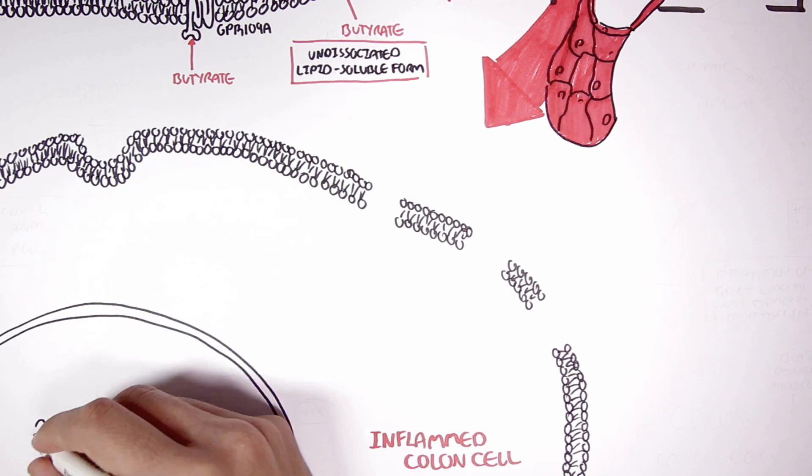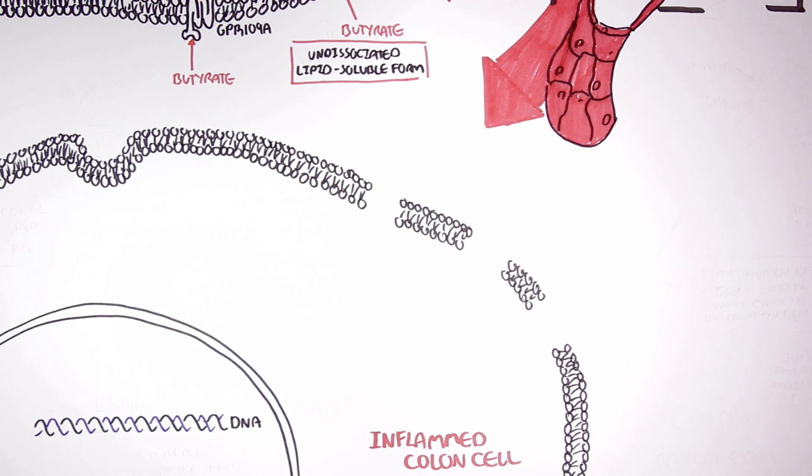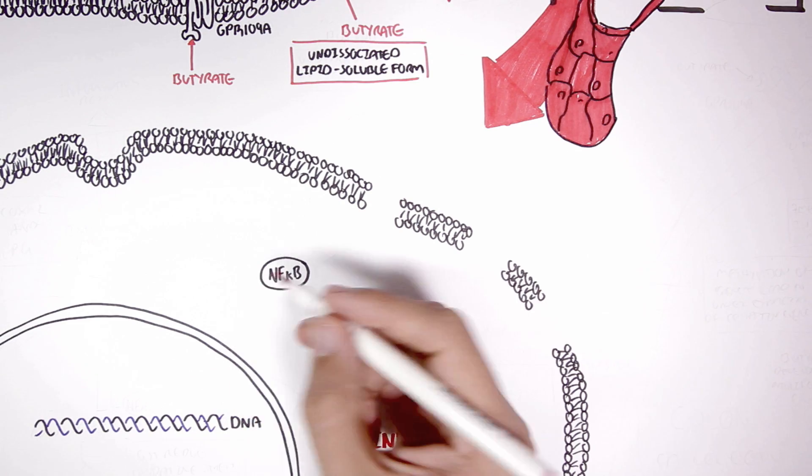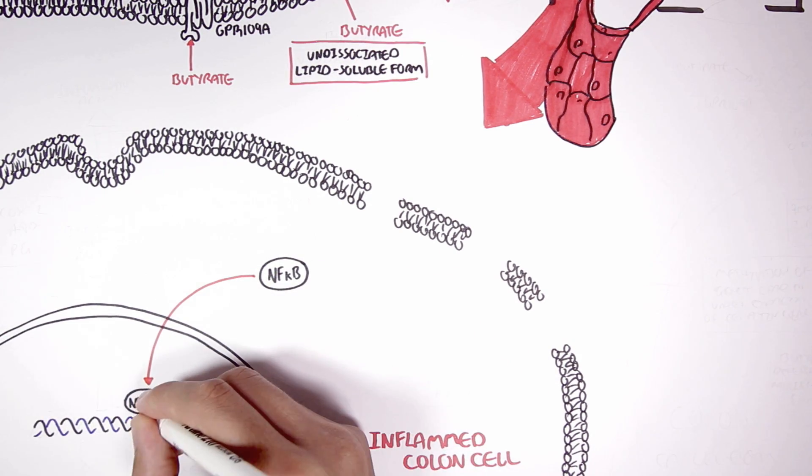In an inflamed cell, there is activation of transcription factors that control the expression of inflammatory cytokines and other proteins. One of these transcription factors is nuclear factor kappa B.